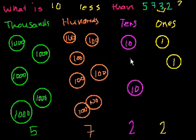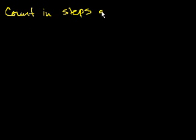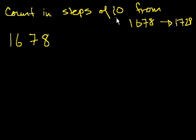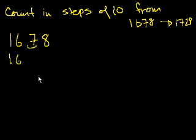Let's do a couple of exercises. Now that we have familiarity with what happens when we add 10 to a number, take away 10, add 100, 1,000, or 1 — let's count by 100, or 1,000, or by 1. Count in steps of 10 from 1,678 to 1,728. So we start at 1,678 and we're adding 10 every time, which increases the tens place by 1. So 1,678 becomes 1,688.